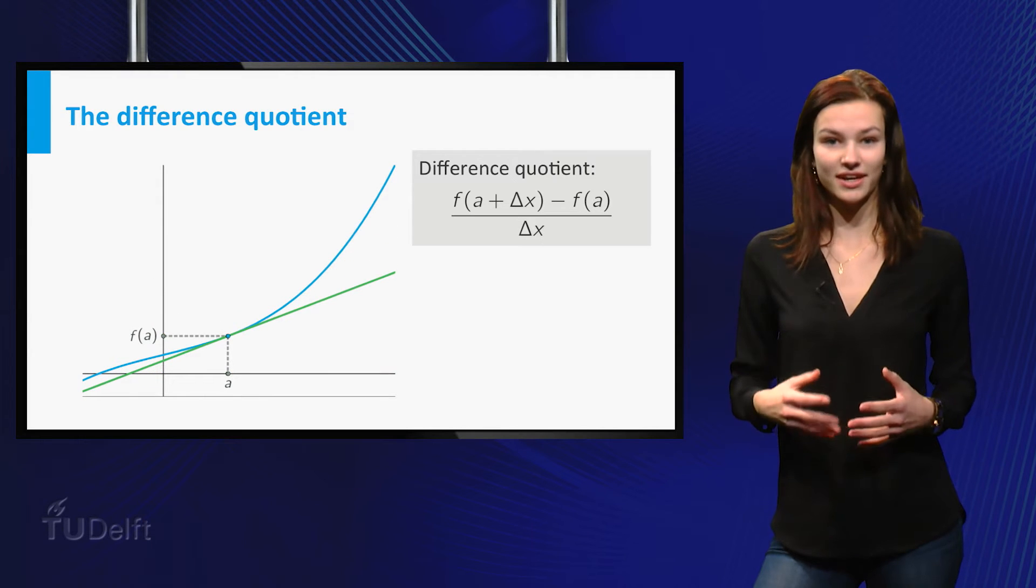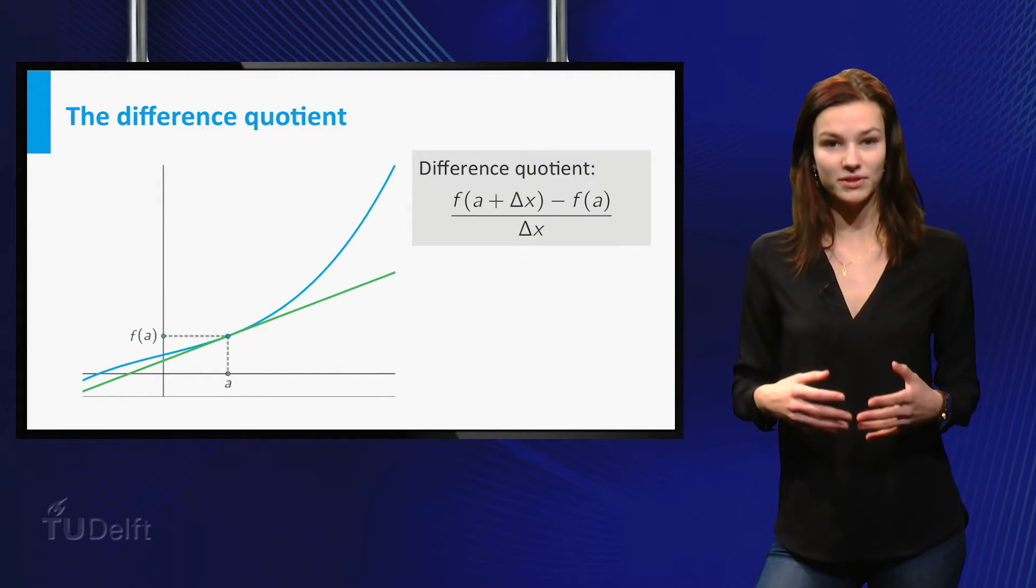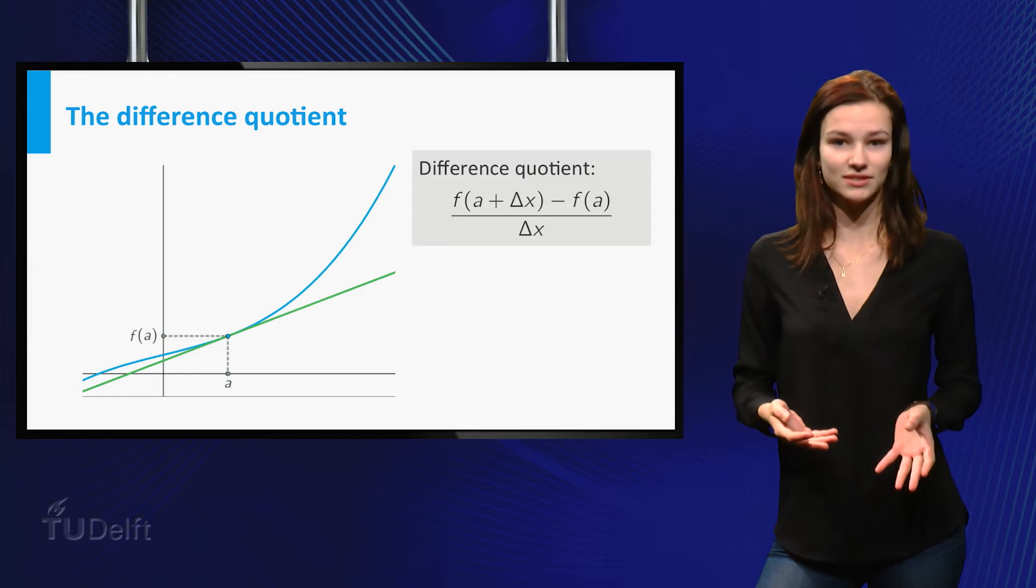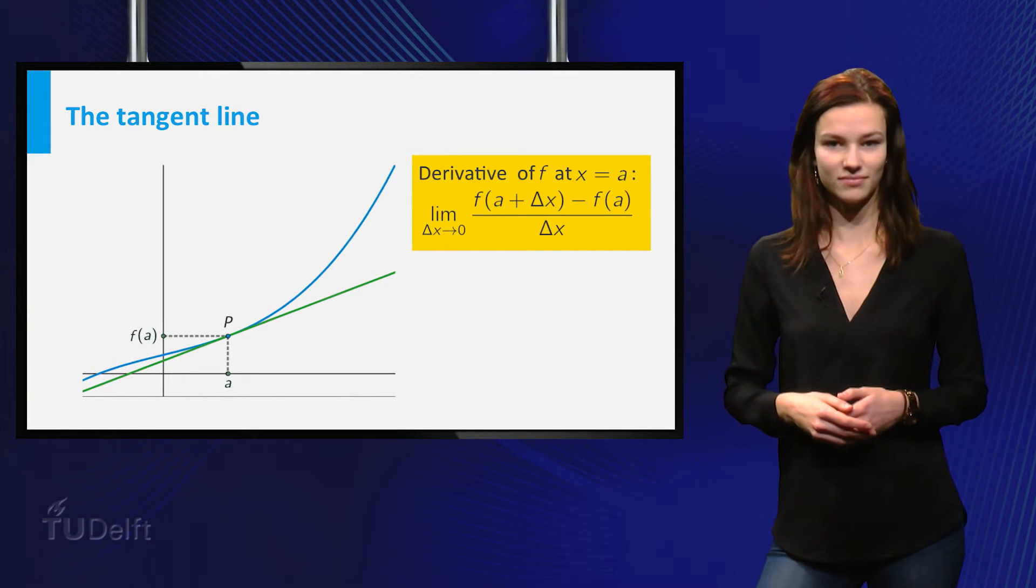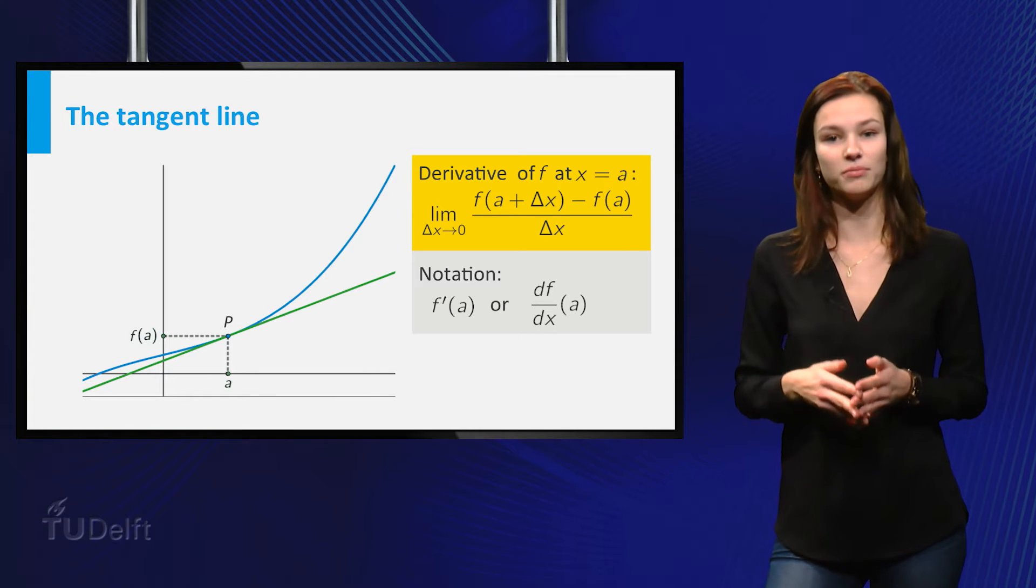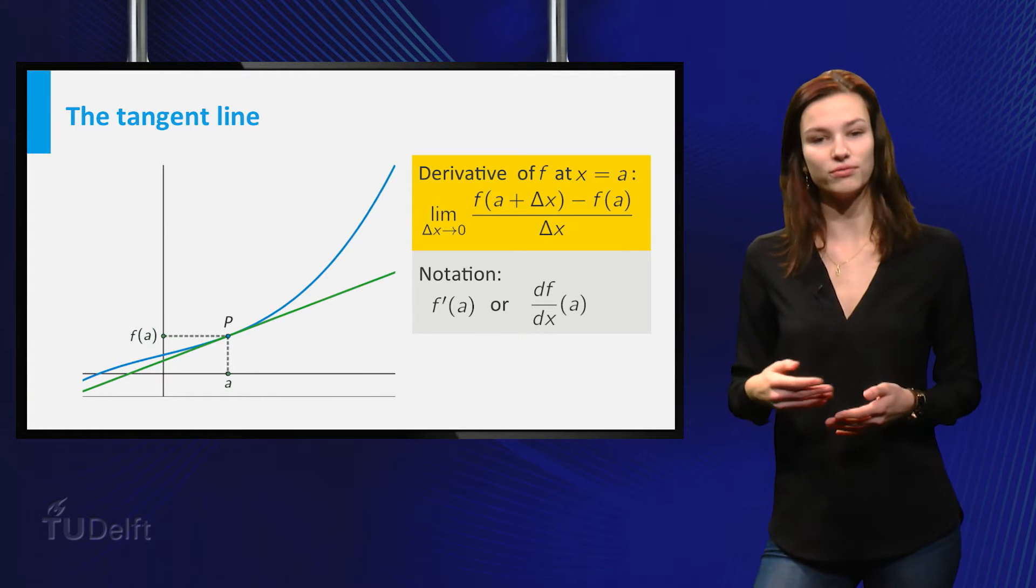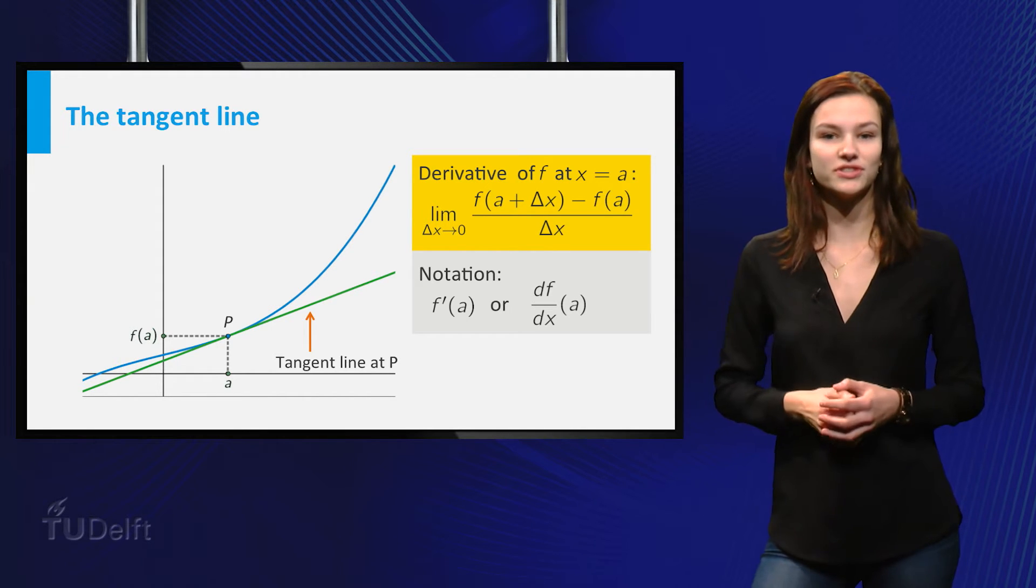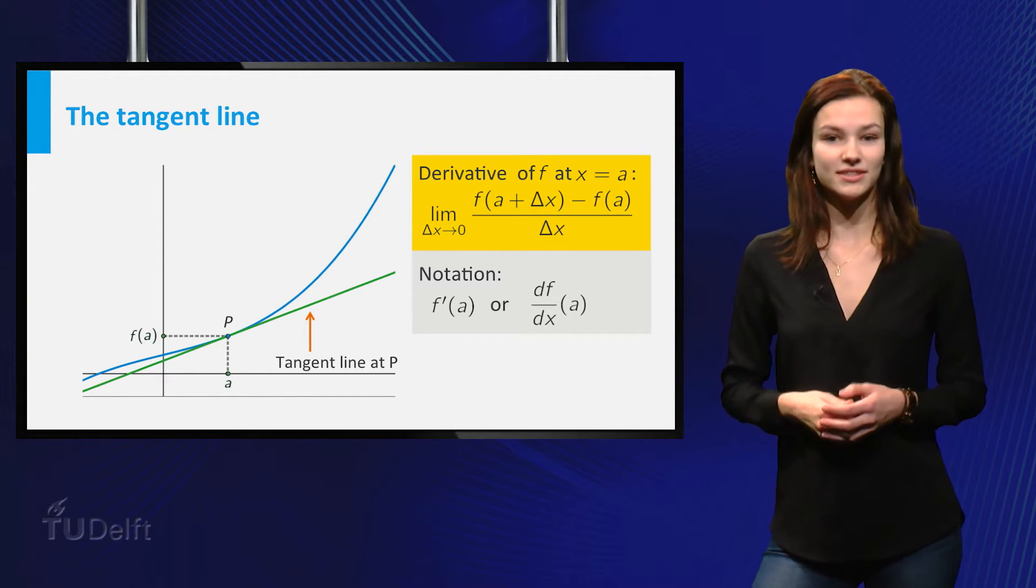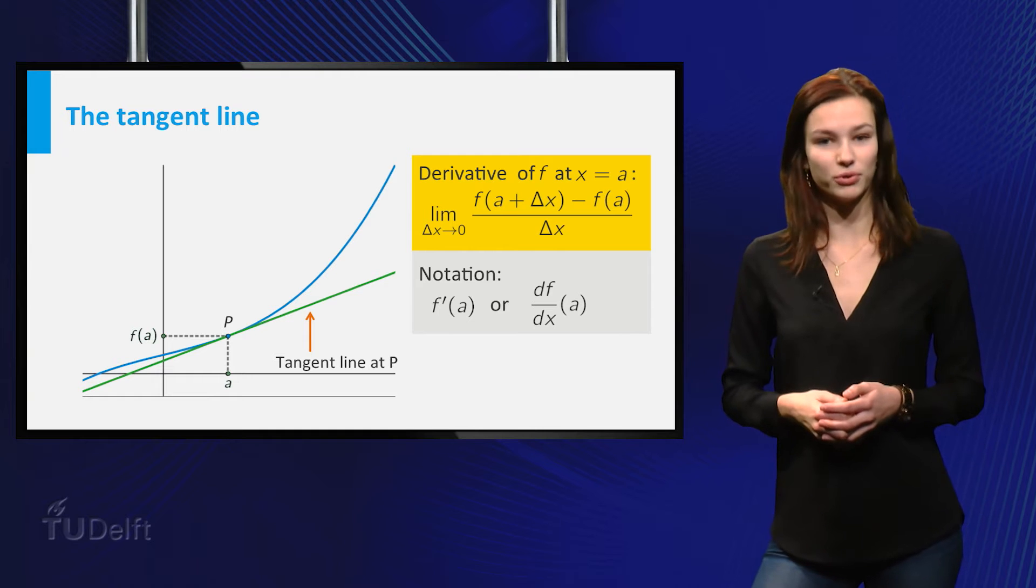Now take delta x to zero. If the limit of the difference quotient exists, it is called the derivative of f at a. It is denoted by f prime of a or df over dx of a. The green line approaches a limiting position. This is the tangent line to the graph at point p.